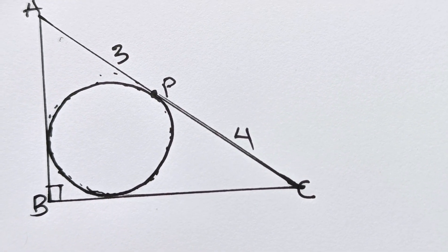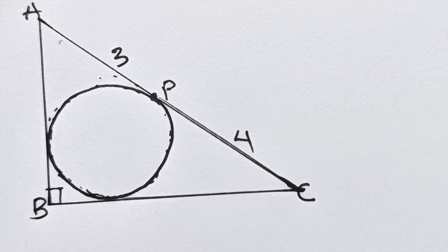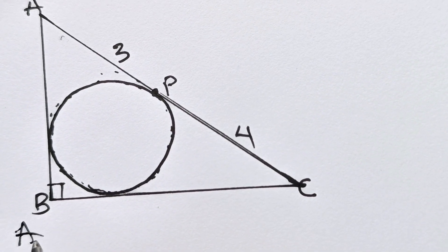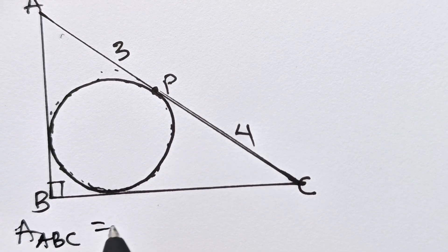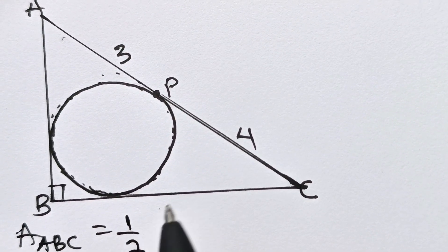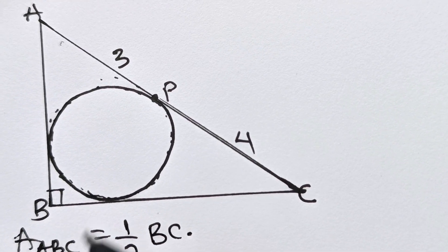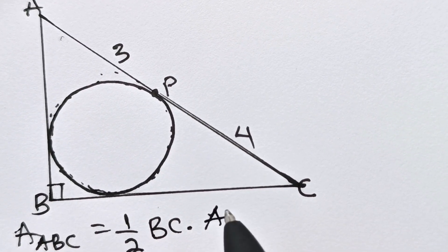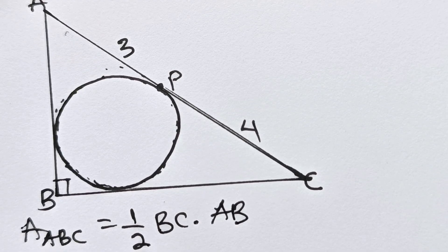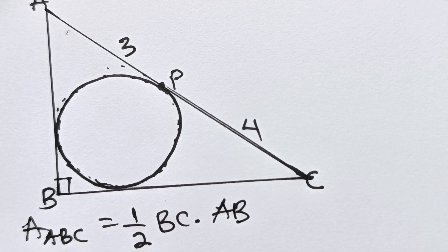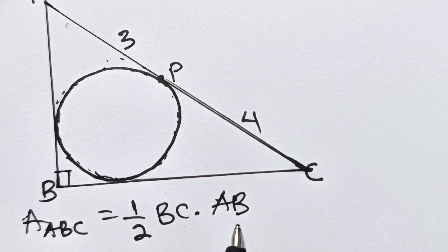First of all, let's remember the formula for area of a triangle. Area of triangle ABC should be equal to half base — the base is BC — multiplied by the height, and the height is AB. We are going to try as much as possible to find the value of BC and the value of AB.